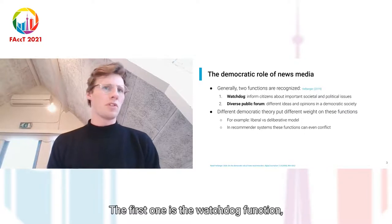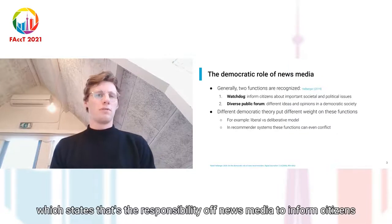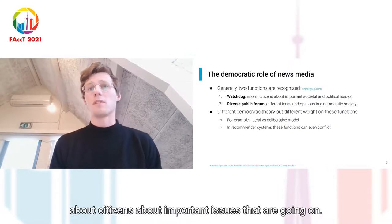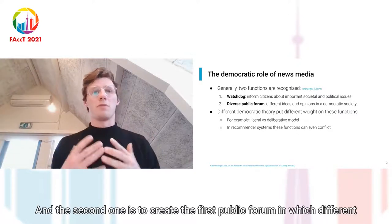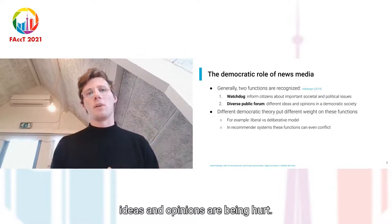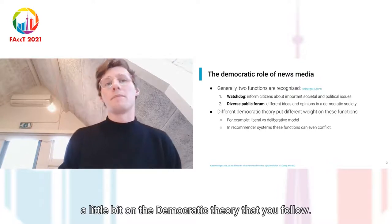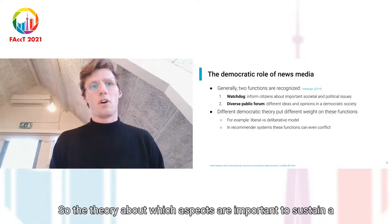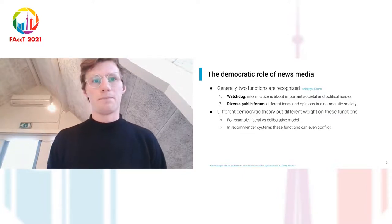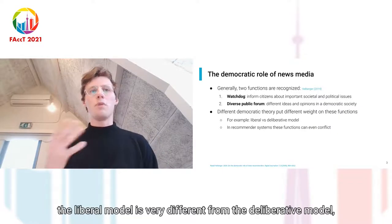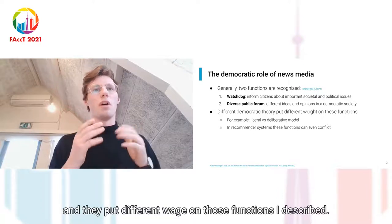The first function is the watchdog function, which states that it's the responsibility of news media to inform citizens about important issues that are going on. The second one is to create a diverse public forum in which different ideas and opinions are being heard. This depends on the democratic theory you follow — for example, the liberal model is very different from the deliberative model, and they put different weights on those functions.